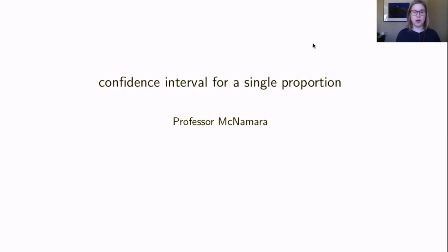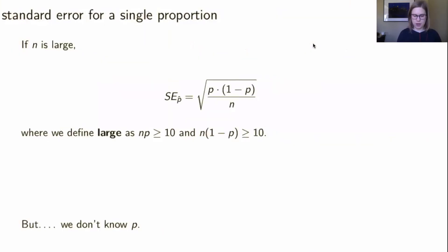We're going to talk about how to do a confidence interval for a single proportion. If n is large, we can approximate the standard error of the proportion with the square root of p times 1 minus p over n, where large means that n times p is greater than or equal to 10, and n times 1 minus p is greater than or equal to 10.